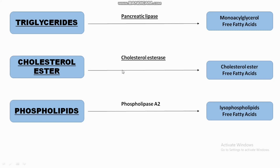The enzyme phospholipase A2 is secreted from the pancreas in an inactive form, which is a zymogen, but later on it is activated by trypsin and acts on the phospholipids to convert them into lysophospholipids and free fatty acids.